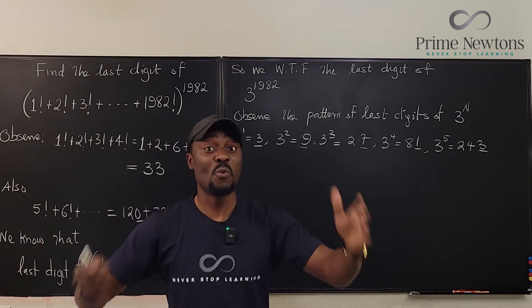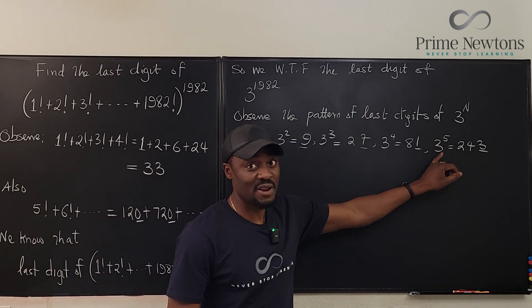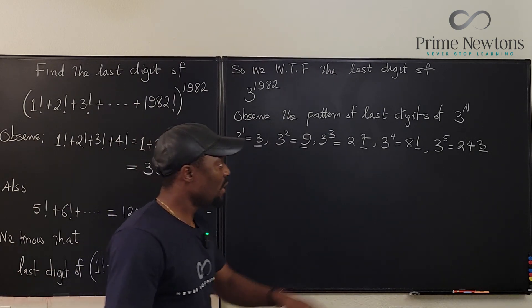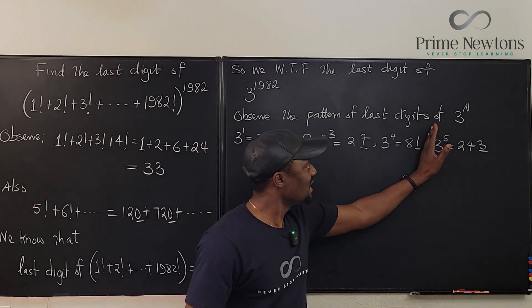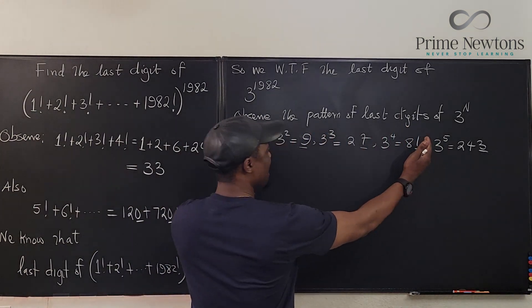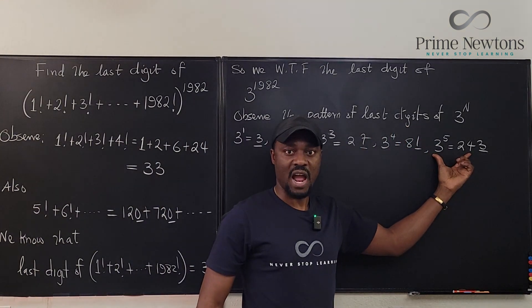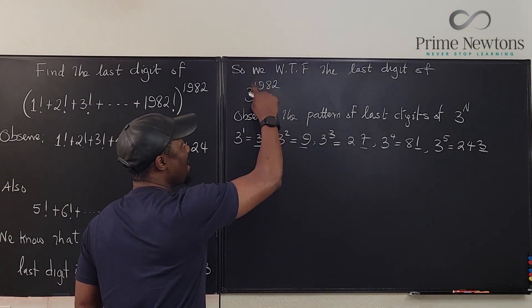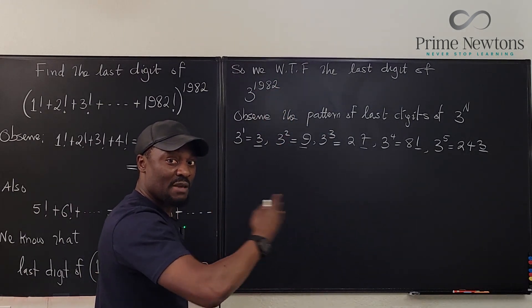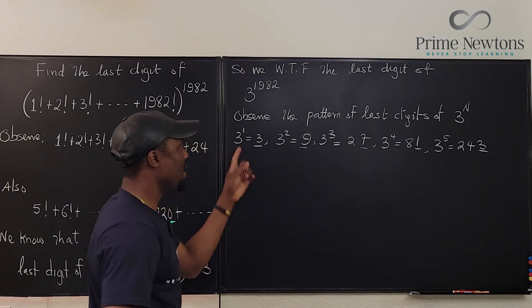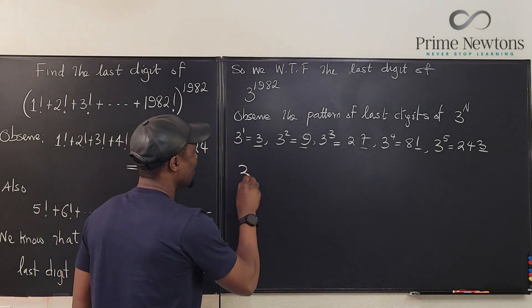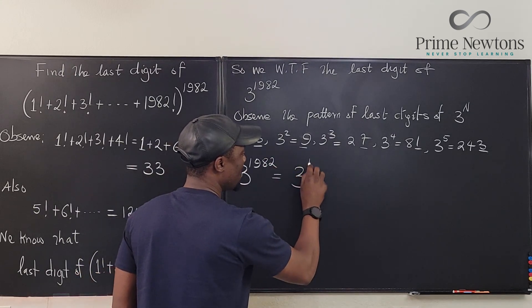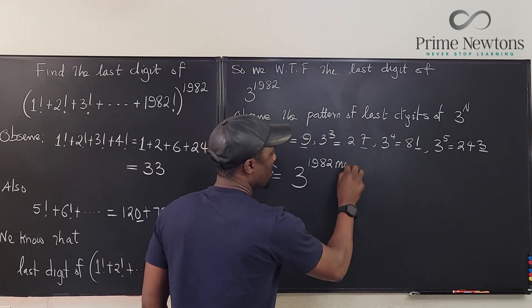The fifth power of any number will have the same last digit as that number. This means we can delete as many full cycles of 4 as possible. We can divide the exponent by 4 and look at the remainder, because every 4 steps we come back to the beginning. So 3^1982 has the same last digit as 3^(1982 mod 4).